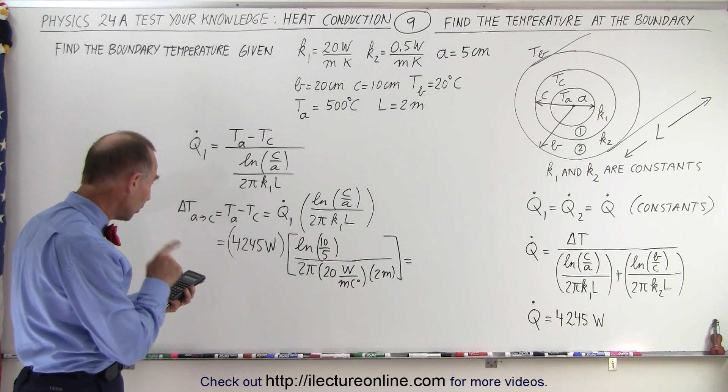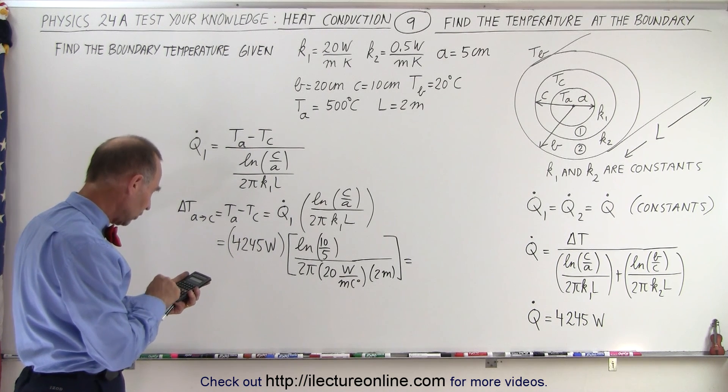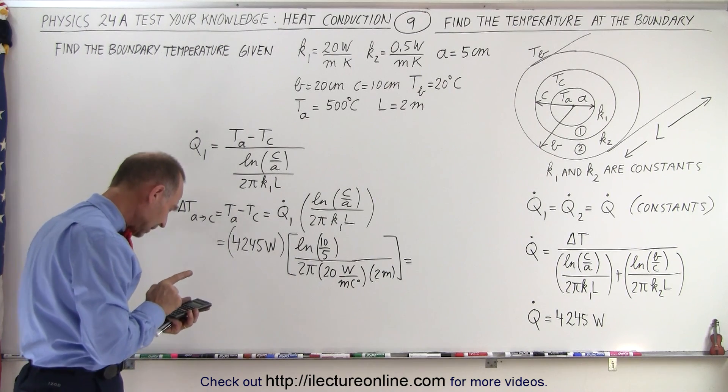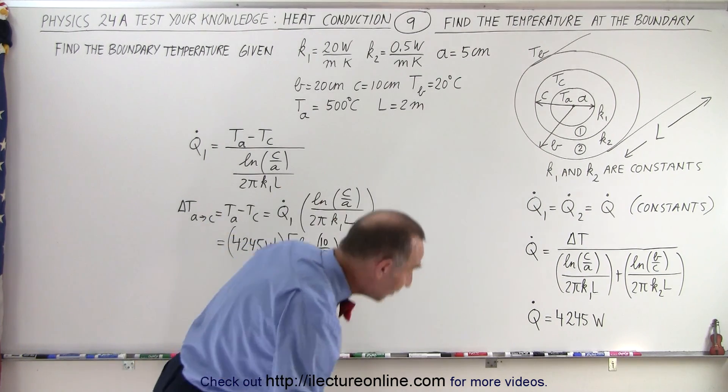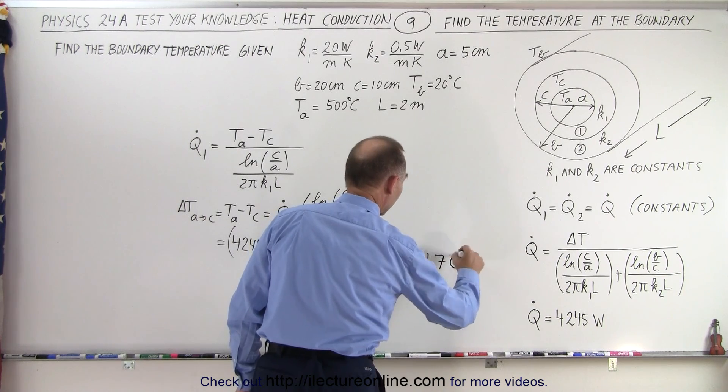Equals multiplied times 4245 watts, and we get 11.7 centigrade degrees, 11.7 centigrade degrees.